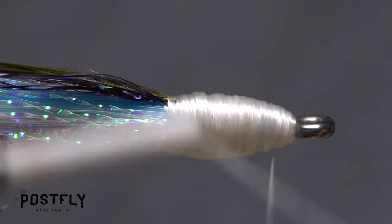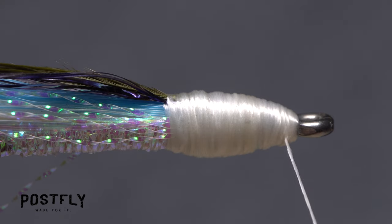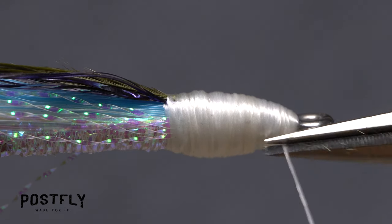When you're satisfied with the shape, reach for your whip finish tool and use it to do a four or five turn whip finish at the back edge of the hook eye, then seat the knot well and snip your tying thread free.